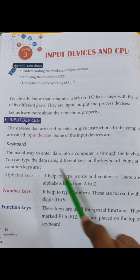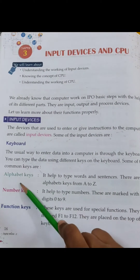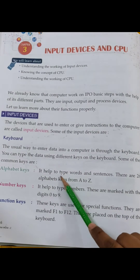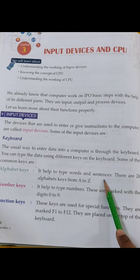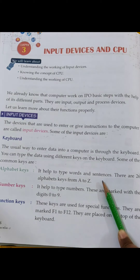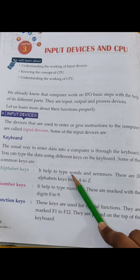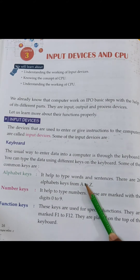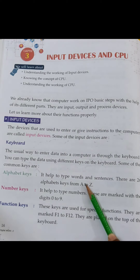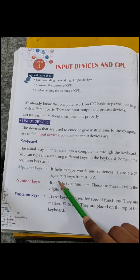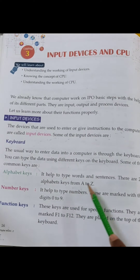Some of the common keys are: First — Alphabet keys. It helps to type words and sentences. यह words और sentences लिखने में help करता है. Alphabet क्या होता है — जैसे ABCD हमारे alphabets हैं, वैसे ही keyboard पे भी ABCD होते हैं, जिससे आप एक word भी type कर सकते हैं, एक full sentence भी type कर सकते हैं.